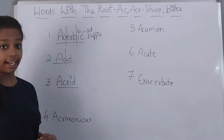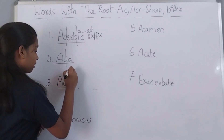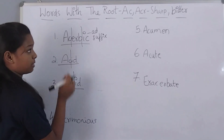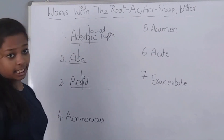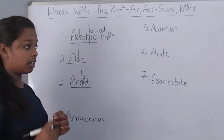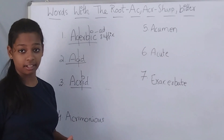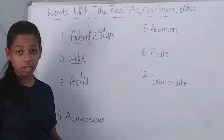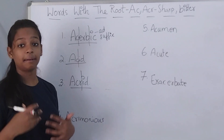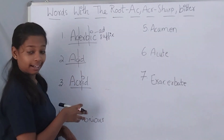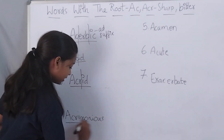The third word for today is acrid. Acrid has one root word in it which is ACR, which means sharp or bitter. The word means a strong bitter smell or taste that is unpleasant.